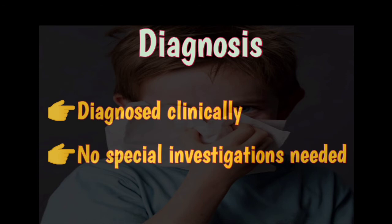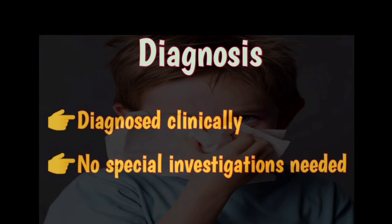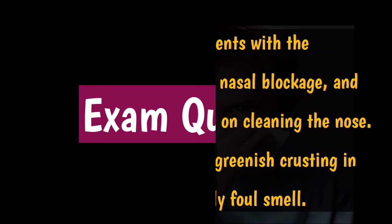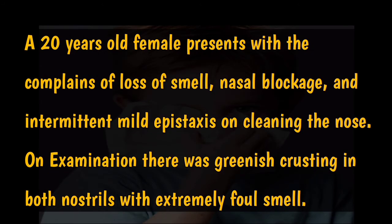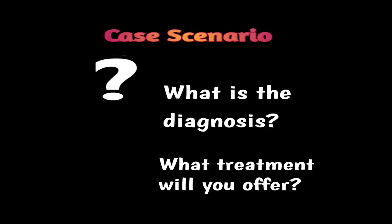The disease is diagnosed clinically depending on the signs and symptoms, and no special investigations are needed. An exam question: a 20-year-old female presents with complaints of loss of smell, nasal blockage, and intermittent mild epistaxis on cleaning the nose. On examination, there was greenish crusting in both nostrils with extremely foul smell. The diagnosis is primary atrophic rhinitis.